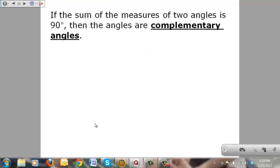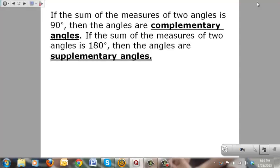If the sum of the measures of two angles is 90 degrees, then these angles are known as complementary angles. If the sum of the measures of two angles is 180 degrees, then these angles are supplementary angles.